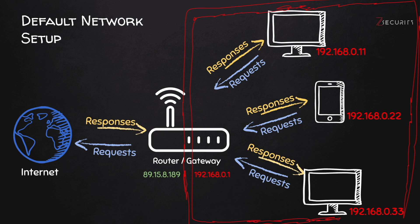First, let's have a look at a default network setup, just to understand what the issue is and how we're going to solve it. In a default setup, we have a number of devices connected to the same network. Each one of these devices has a private IP, as you can see here in red, and they're all connected to a router. The router has two IPs — a private IP in red and a public IP in green.